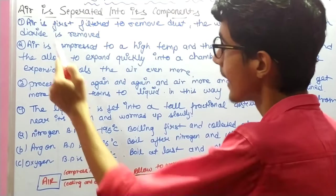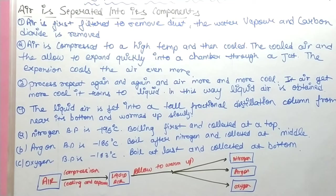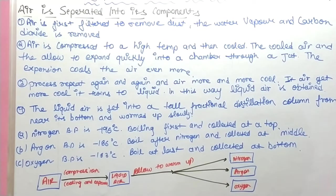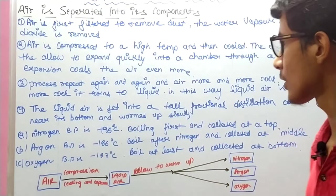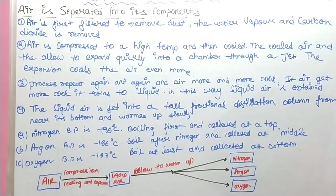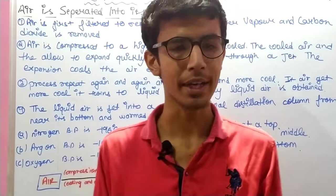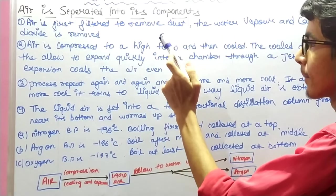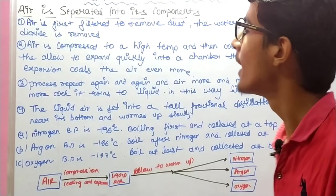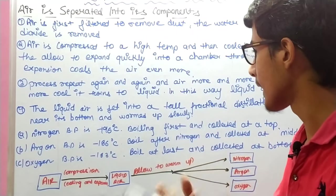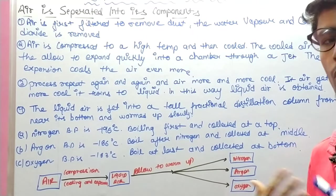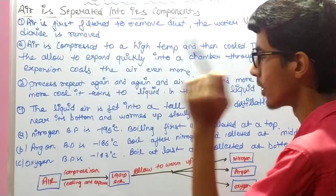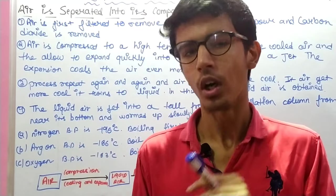Second, air is compressed to high pressure and then cooled. The cooled air is allowed to expand quickly into a chamber through a jet. This expansion cools the air even more. When we repeat this process of compressing, cooling, and expanding again and again, the air becomes cooler and cooler.